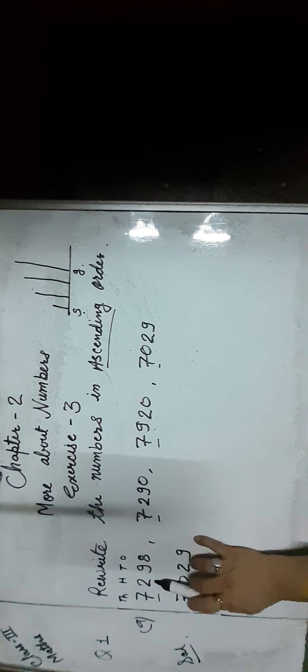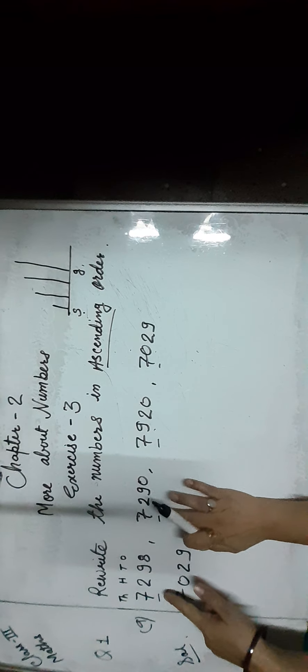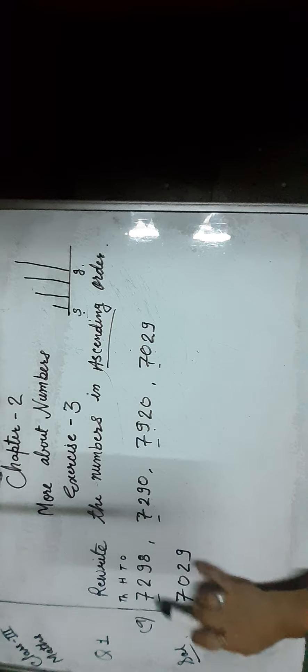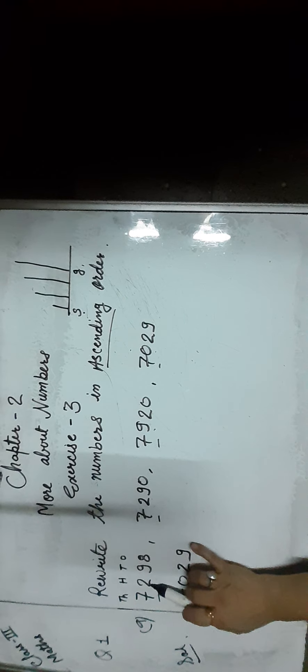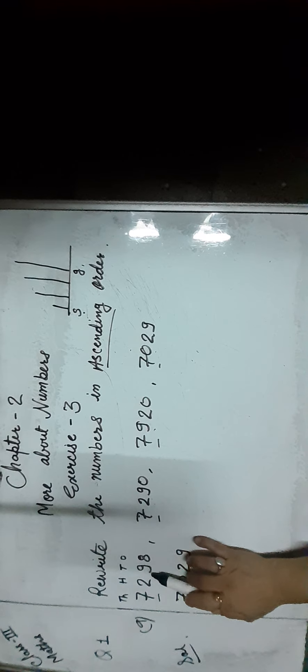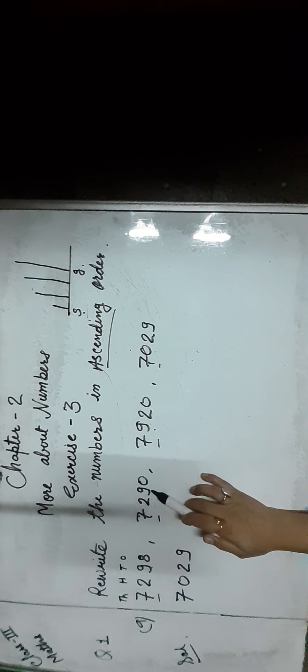So first we write 7,029. Now let us compare the remaining numbers. The 100s place digit 2 is smaller than 9, so we compare those two numbers. Now here the 100s place digits are same, so we have to move to the 10s place digit — that is 9 and here is 9.